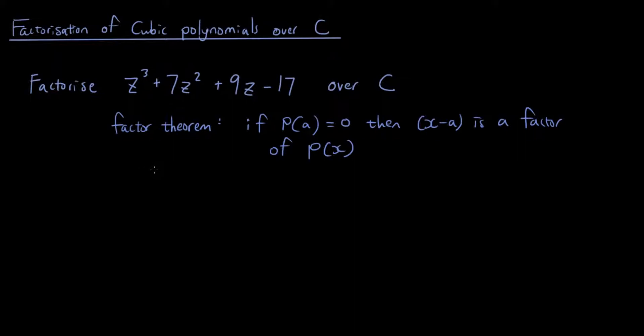Now that we have used this theorem, what we want to do is find a value of z that will make this expression equal to zero. So we're going to try and find p(z) where the answer is going to be equal to zero. So p(z) = z³ + 7z² + 9z - 17 = 0 and we want to find what z is.